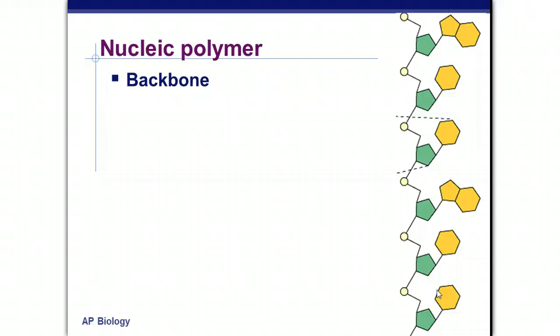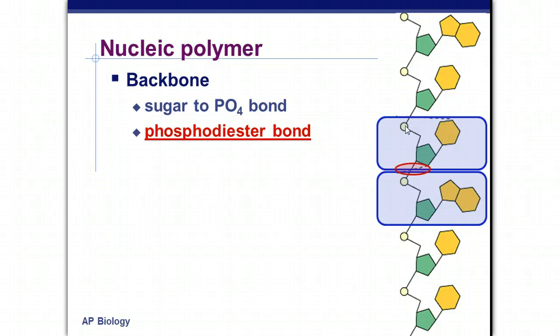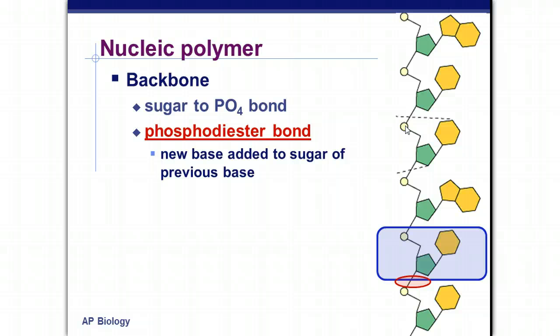So a nucleic polymer, so multiple nucleotides attached together, is a nucleic acid. It has a backbone, and that's a sugar-to-phosphate bond. We call that bond a phosphodiester bond. So here we see one nucleotide that's highlighted in blue there. There's another one. And what's highlighted in red there is that phosphodiester bond. So you can see here the five carbon sugar, the phosphate group. The bond is between the sugar and the phosphate group. There's another nucleotide. And see if you can guess where that phosphodiester bond is going to be. Kablamo! Right there. Good job. You get it. Do you get it? I hope you get it. A new base is added to the sugar of the previous base. And the polymer can only grow in one direction.